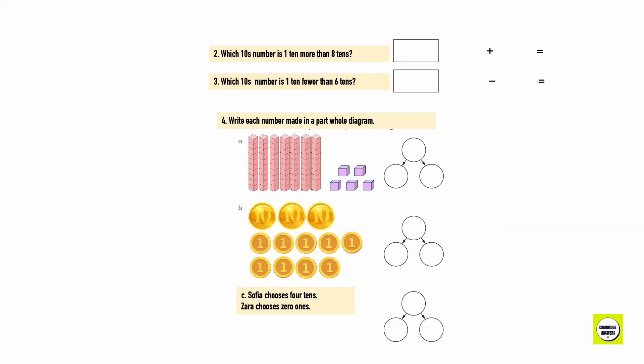Which tens number is 1 ten more than 8 tens? So we have 8 tens and the number that we want is 1 ten more than 80. So we have 90. Which number is 1 ten fewer than 6 tens? So we have 6 tens over here and the number that is 1 ten less than 60 is 50. Write each number made in a part-whole diagram. So we have 7 tens over here and 5 ones. Which means we have 75. We have 3 tens and 9 ones. Which means we have 39. Sophia chooses 4 tens. Zara chooses 0 ones. 40.